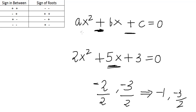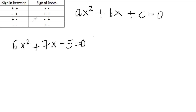One important thing to remember in this method: always keep the coefficient of x squared positive when solving the quadratic equation. Let's look at some more examples to clarify the concept. Now one thing to note in this table is when the sign in between is plus-minus — plus here and minus here — the sign of our roots is minus-plus. When the sign in between is minus-minus, the sign of our roots is plus-minus.